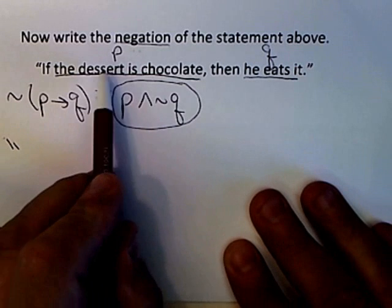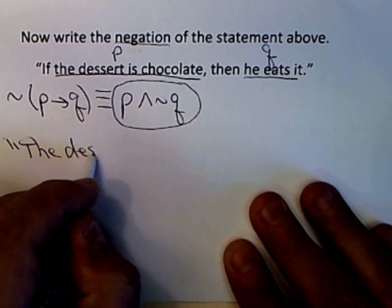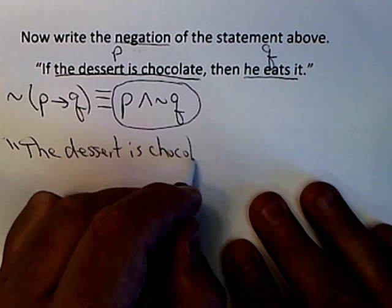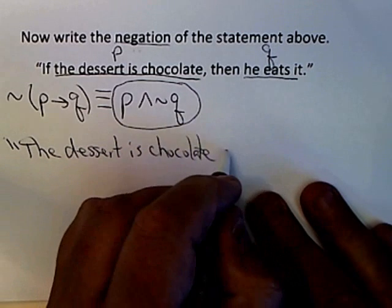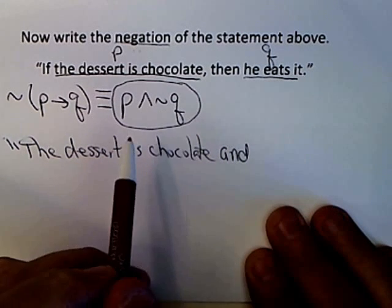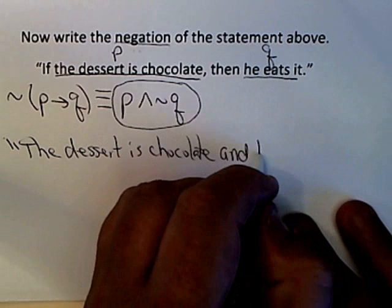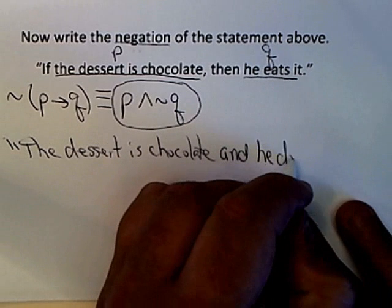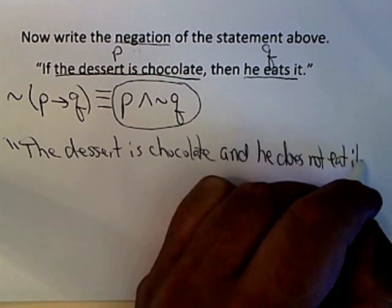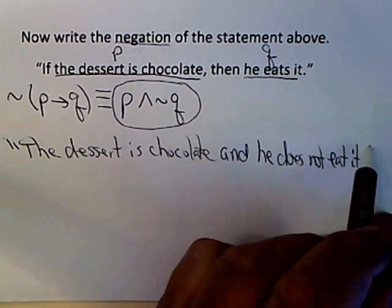P is the dessert is chocolate. The dessert is chocolate. There's an and, the negation of an implication is always an and. And then q is negated. So if he eats it is q, then he does not eat it would be the negation of that.